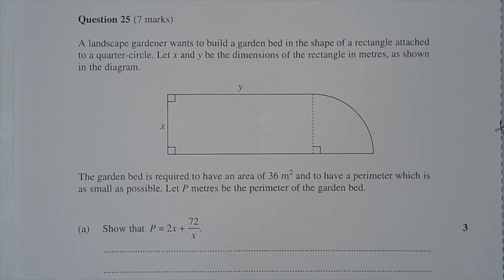The garden bed is required to have an area of 36 square meters and to have a perimeter which is as small as possible.